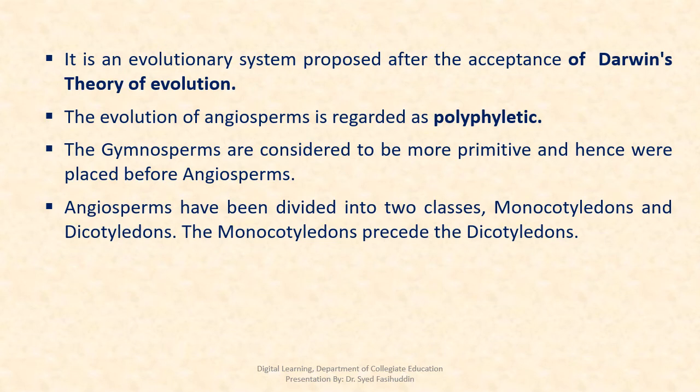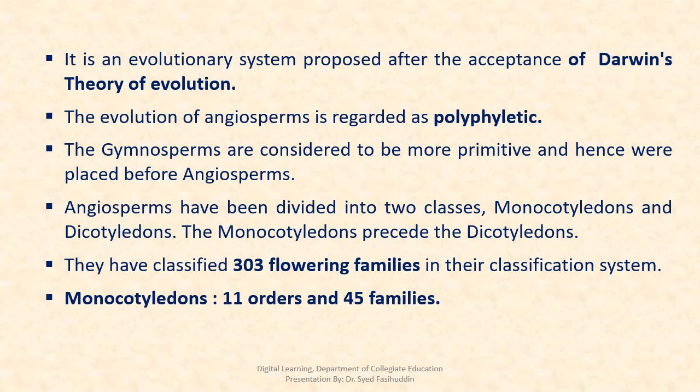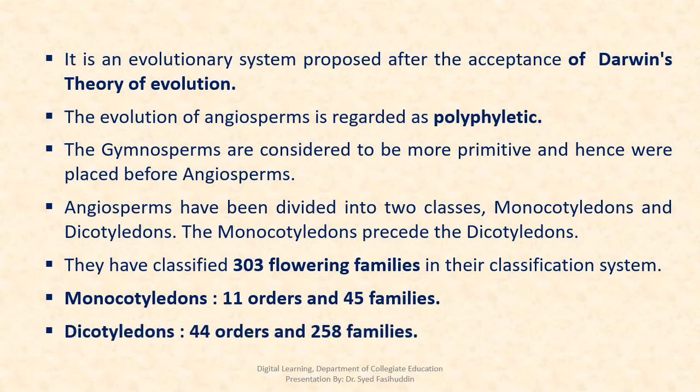Angiosperms have been divided into two classes: Monocotyledons and Dicotyledons. The Monocotyledons precede the Dicotyledons. They classified 303 flowering families — Monocotyledons with 11 orders and 45 families, and Dicotyledons with 44 orders and 258 families.